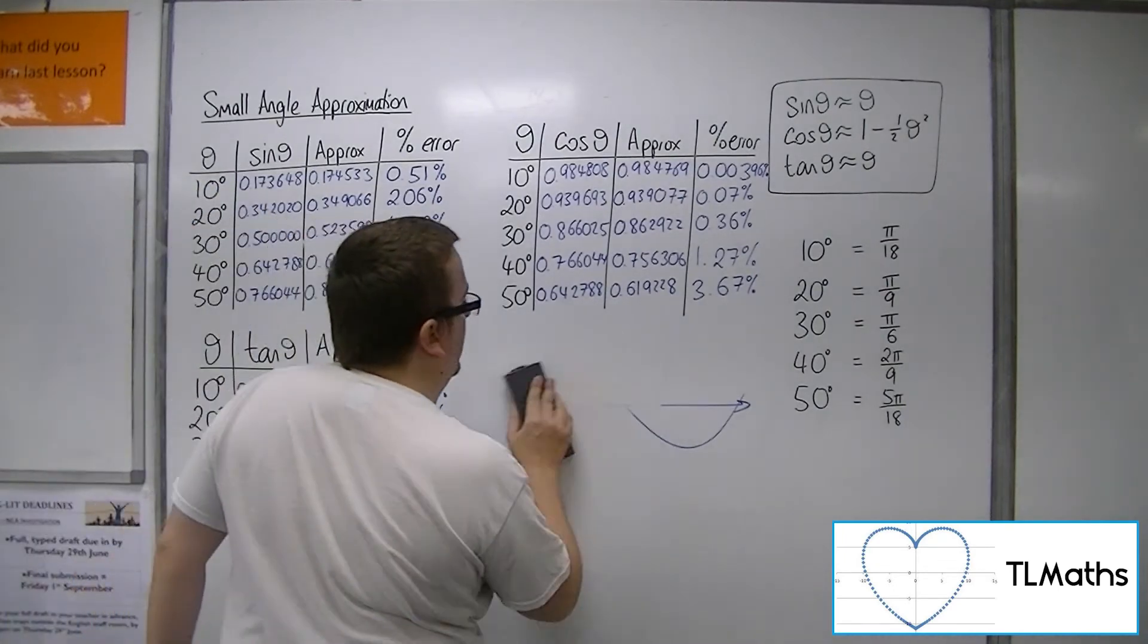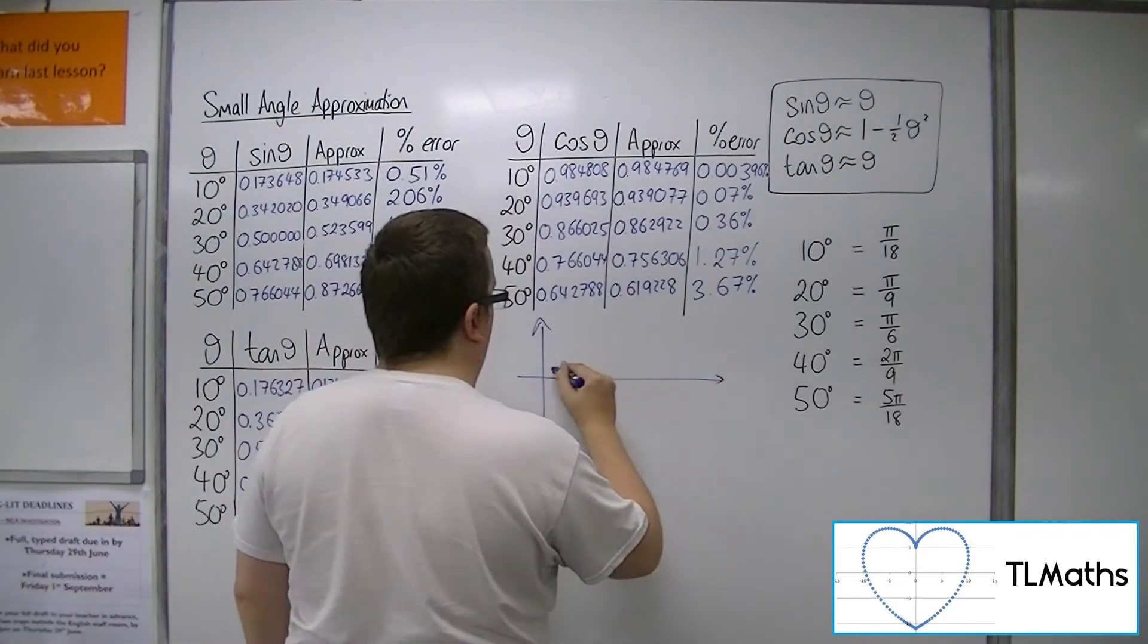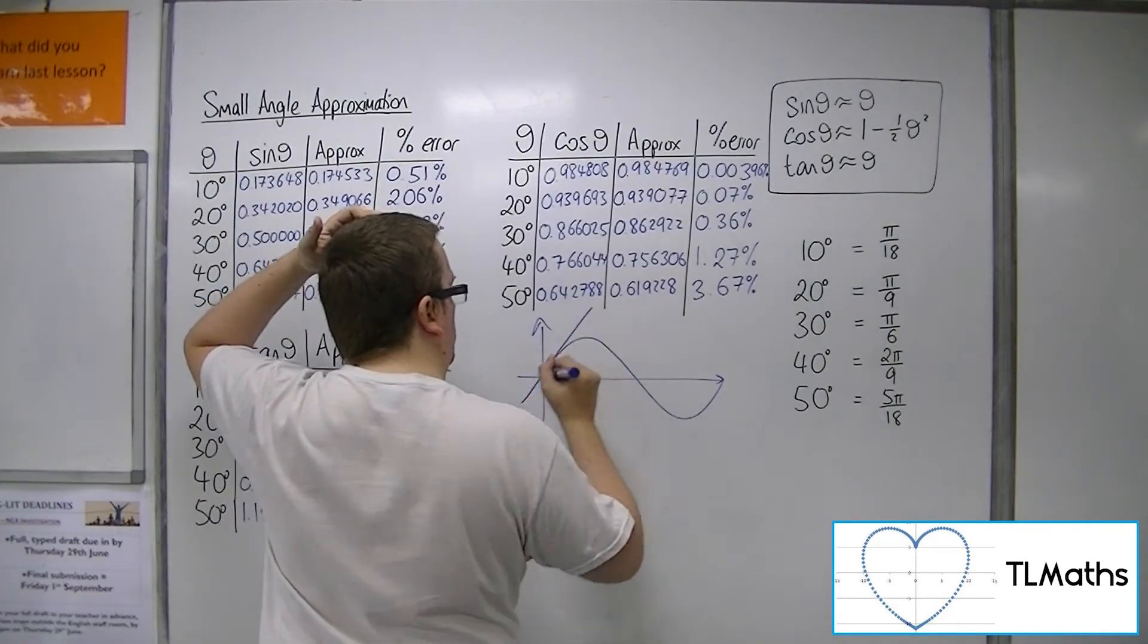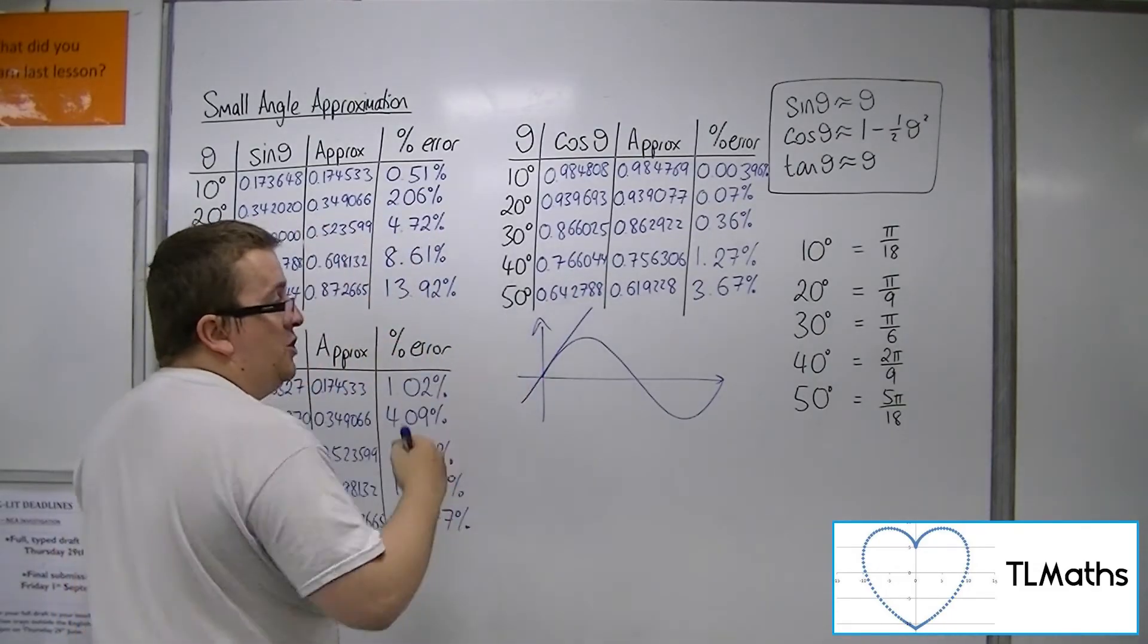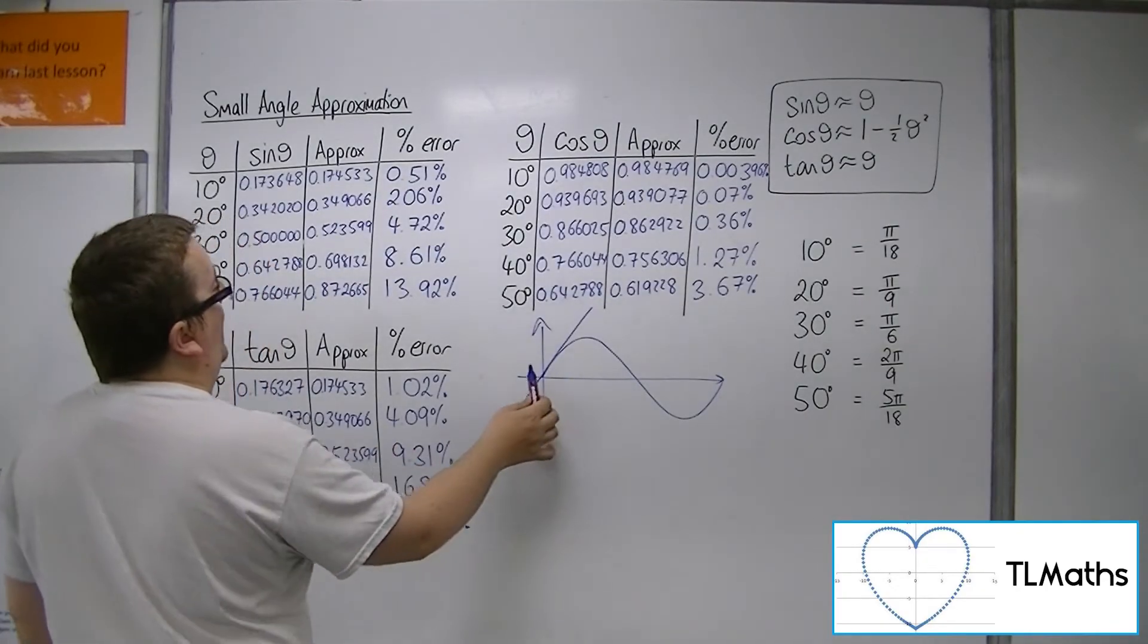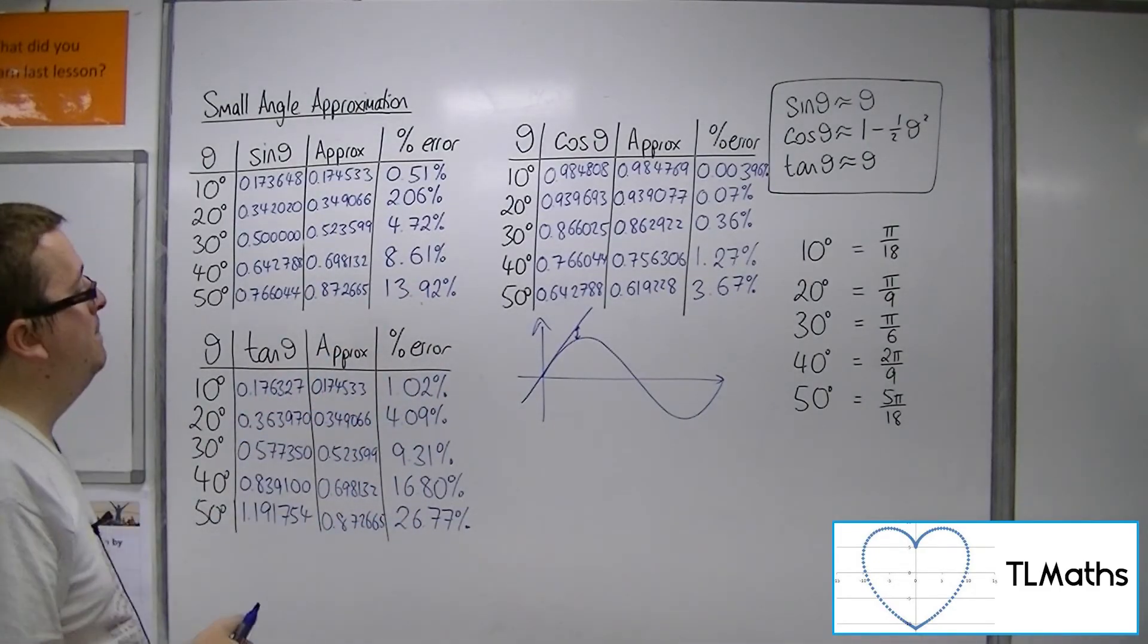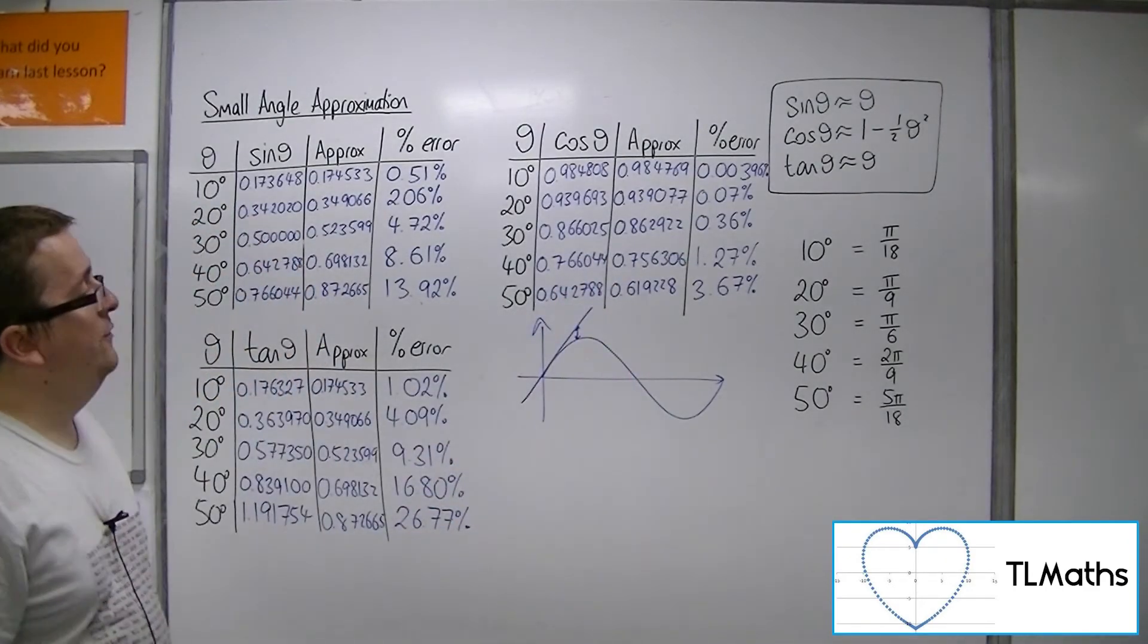If we have a look at sine and tan, now sine looks something like that. Now, theta is just, effectively, your y equals x line. So, once you go beyond a certain point, that straight line is not going to be a very good approximation whatsoever. As you get further and further along, that gap between the straight line and the curve is increasing. And so, the percentage error is much larger than it would be for cosine.